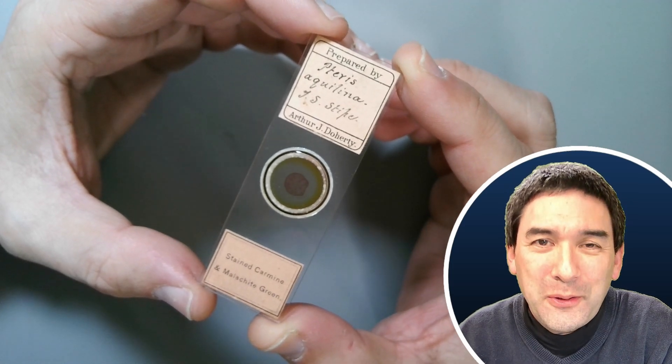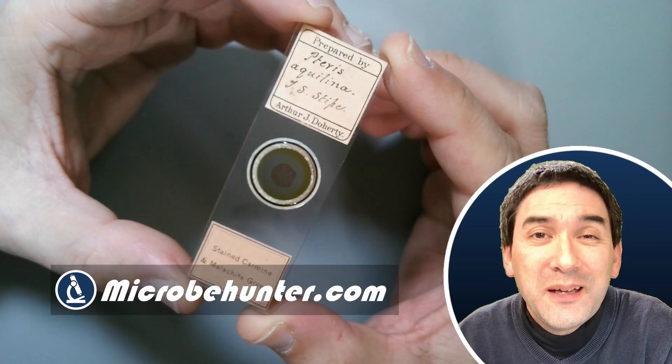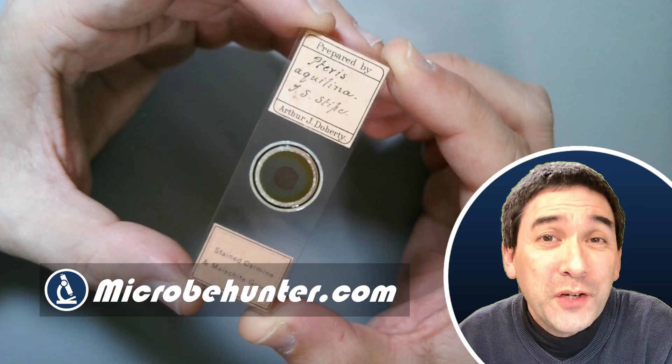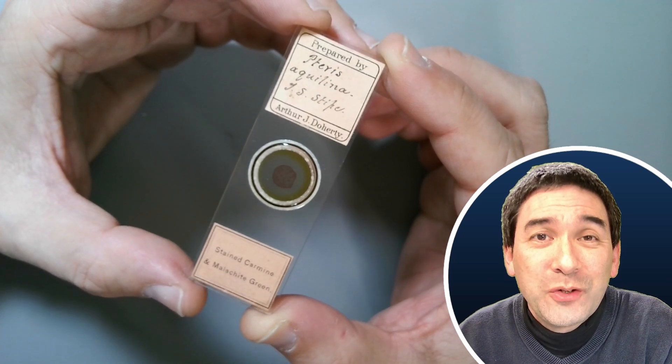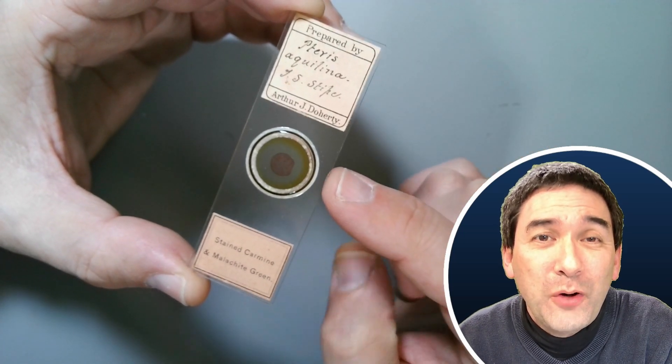Hi, hello and welcome. Microbe Hunter here. This here is an antique microscope slide. It is over 120, maybe even 130 years old and it shows the cross section of the stem of a fern.